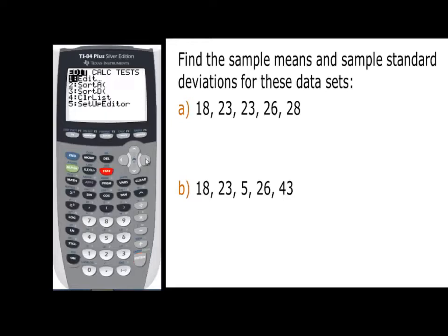Now, to get the one variable stats, press the Stat button again, then arrow over so it says Calc on the top. And we're going to use that very first function on the list, which is one variable stats. So press enter.